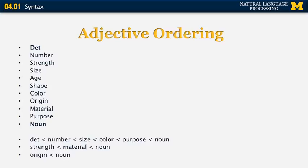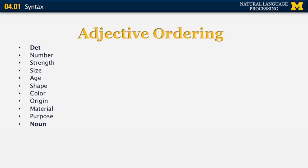If you have a determiner, adjectives, and a noun, they most likely appear in this order: determiner first, noun last, and adjectives in the middle in the following order — number, strength, size, age, shape, color, origin, material, and purpose. You can infer this ordering by looking at the examples and the partial order they create.